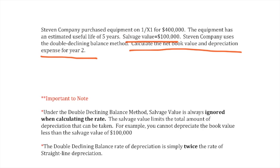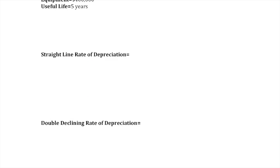So again, when using the double declining balance method, make sure to ignore the salvage value when calculating the rate. As you can see here. Keep in mind here that we are calculating the rate of depreciation and not the depreciation expense. That will be in another step.